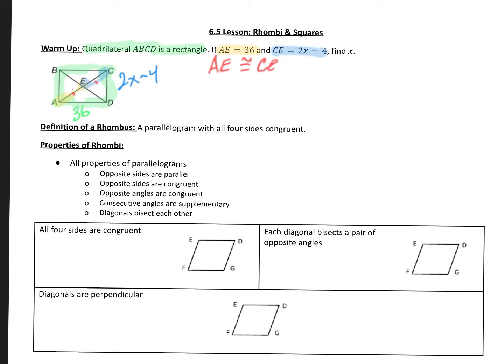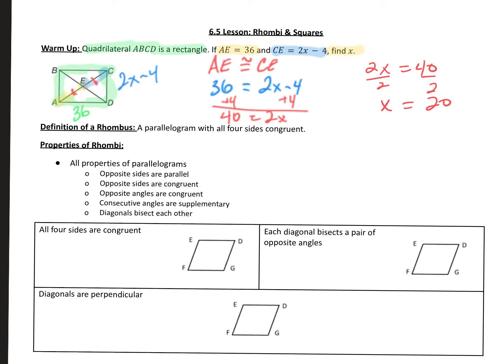These are congruent sides right here — those tick marks represent that. So now we substitute in what we know: AE is 36, and that congruence becomes equal. CE is 2x minus 4. So we solve for x: add 4 to both sides to get 40 equals 2x, then divide by 2. Our answer is x equals 20.